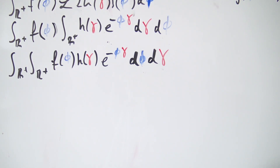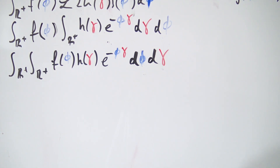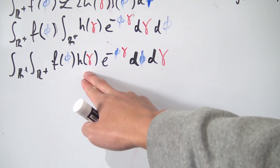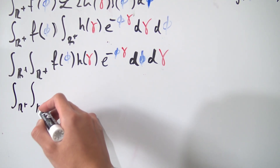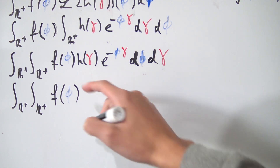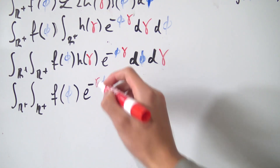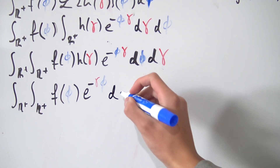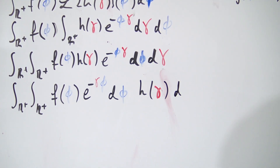Now the inner integral is with respect to φ, which means everything involving γ is like a constant and can be pulled outside the inner integral. So h(γ) comes out to the outside, and we have the double integral over ℝ⁺ of f(φ) times e^(−φγ) dφ, multiplied by h(γ) dγ.